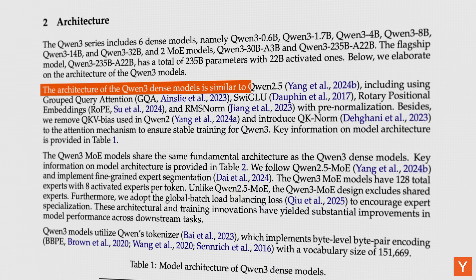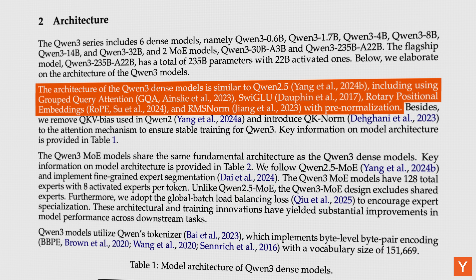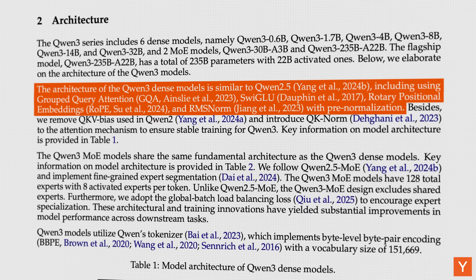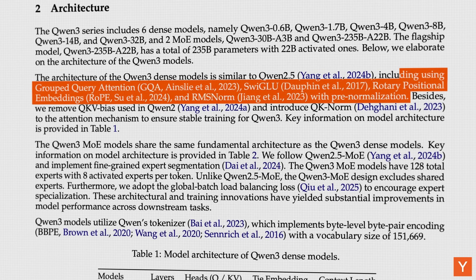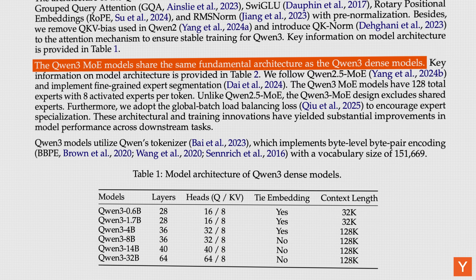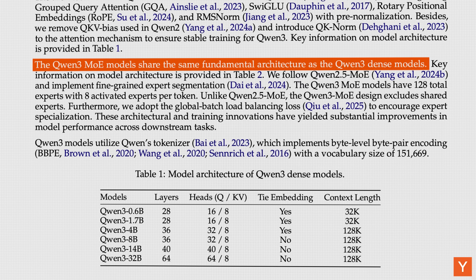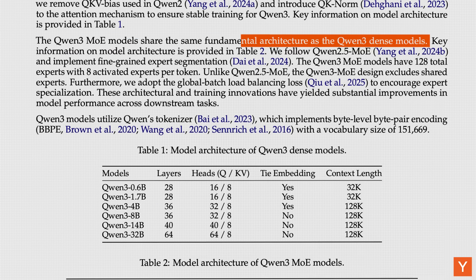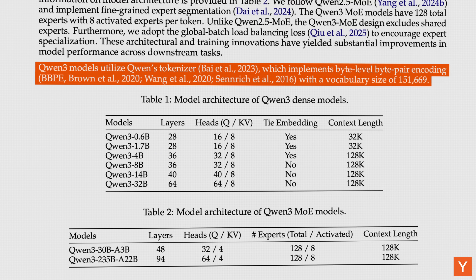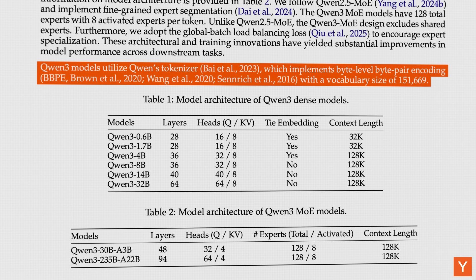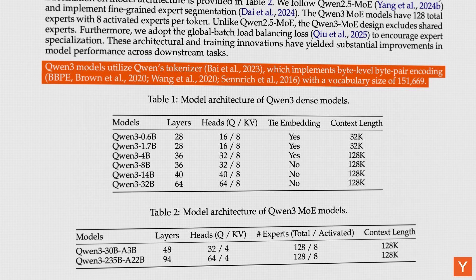Architecturally, Qwen3 dense models are very similar to the Qwen2.5 models — Alibaba's previous releases. Like Qwen2.5 and GPT-OSS, Qwen3 incorporates features like grouped query attention, SwiGLU, RoPE, and RMSNorm. Qwen3's sparse models share the same fundamental architecture as its dense models, but add a mixture of experts layer with 128 total experts, of which eight are activated per token. All Qwen3 models also use the same tokenizer used in previous Qwen models, which implements byte-level byte-pair coding to handle any text or symbol without special preprocessing.